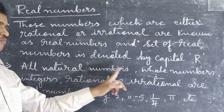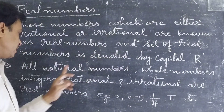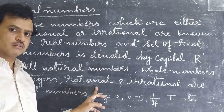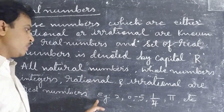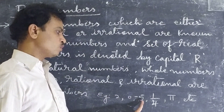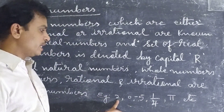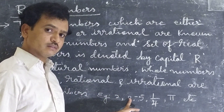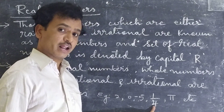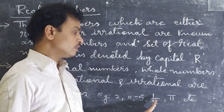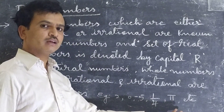All natural numbers, whole numbers, integers, rational numbers, and irrational numbers are real numbers. For example, the numbers 2, 0, minus 5, 1 by 4, and pi. Here, 2 belongs to natural numbers, 0 to whole numbers, minus 5 to integers, 1 by 4 to rational numbers because it is in the form P by Q, and pi is an irrational number. So all these numbers come under real numbers.